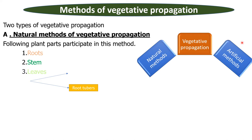The vegetative propagation that takes place in nature naturally by the plants involves the following plant parts: one is roots, second is stem, and third is leaves.